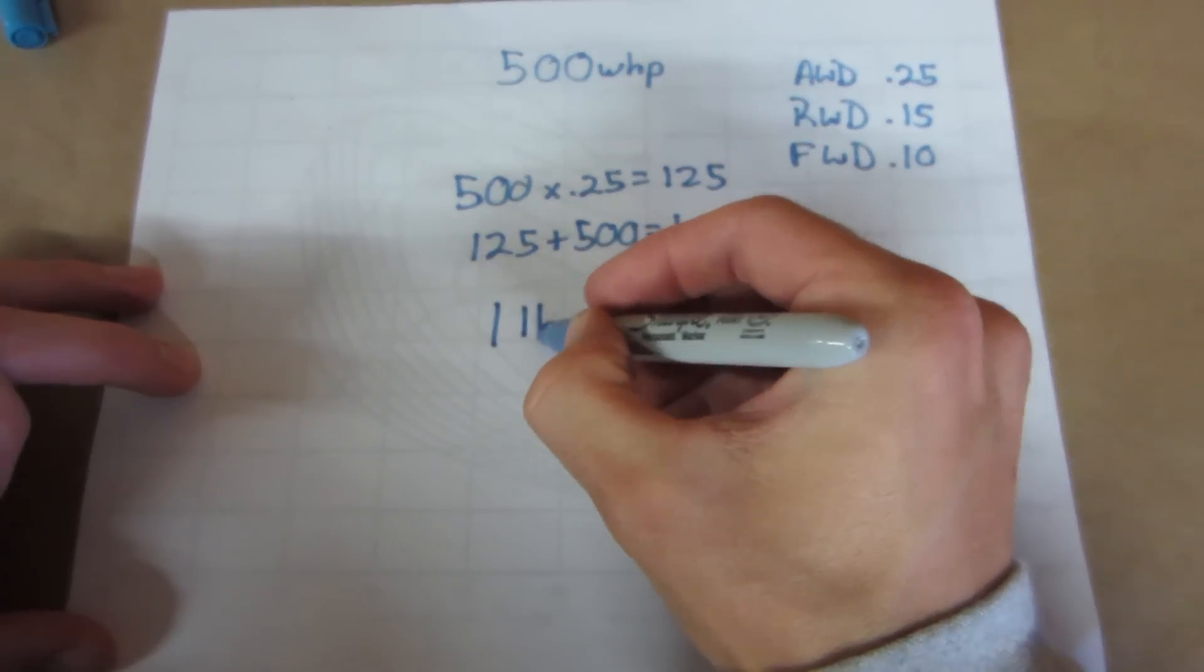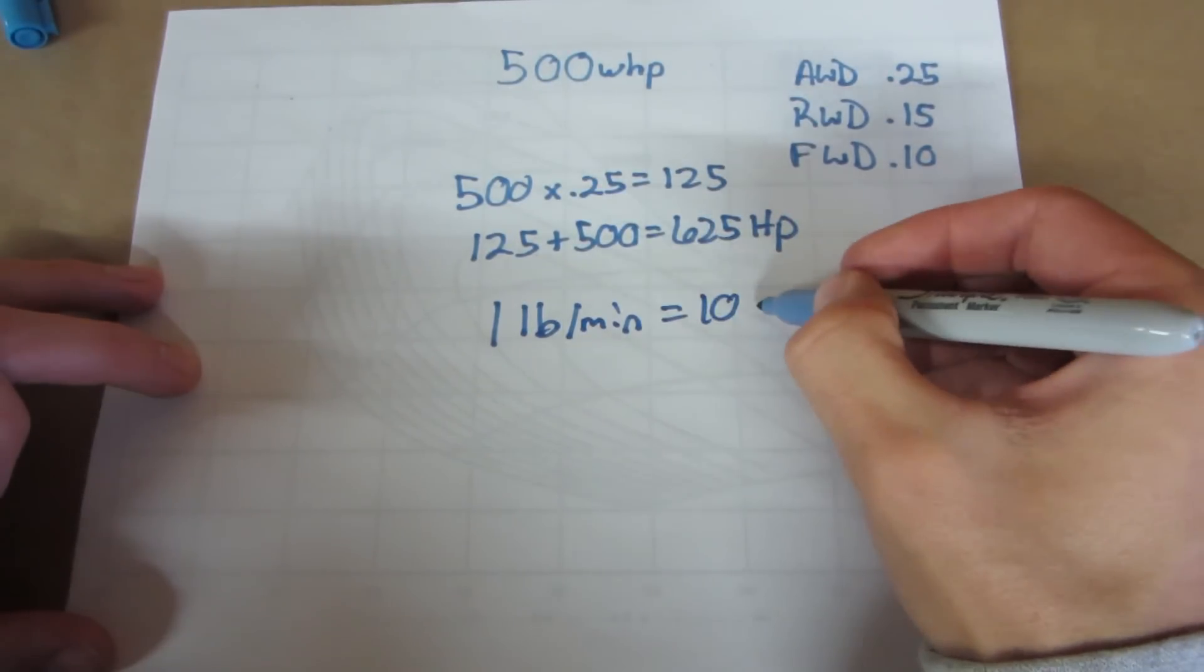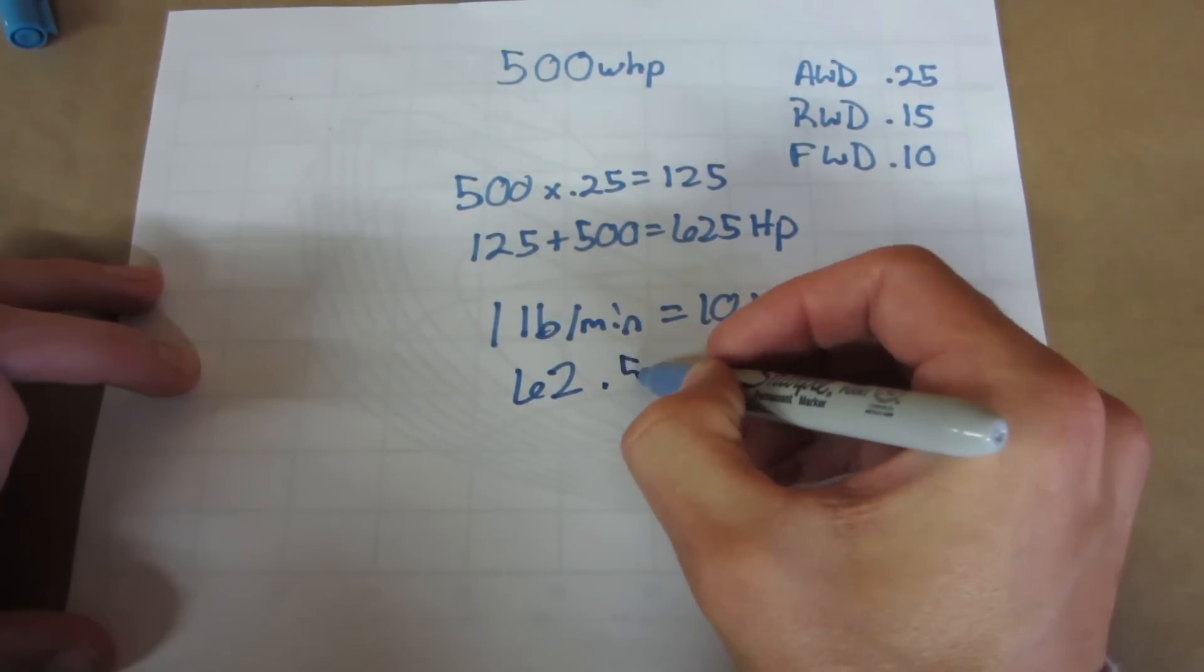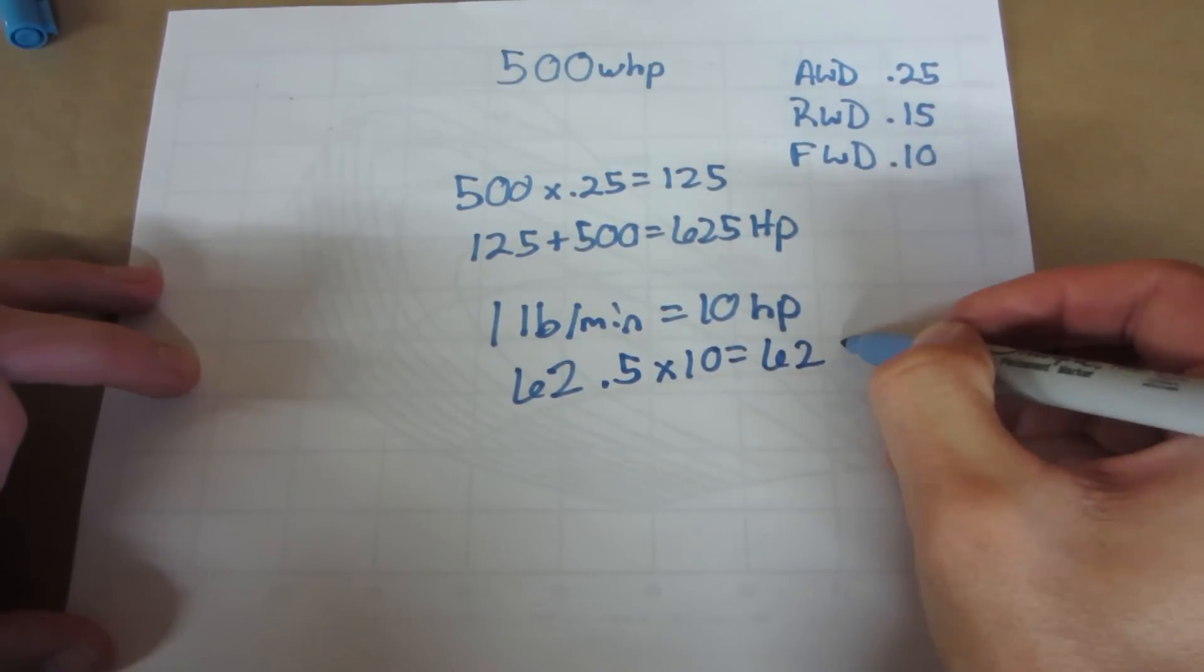It is a good rule of thumb that one pound minute of airflow equals 10 horsepower at the crank. So you would need 62 and a half pound minute of airflow to get your 625 horsepower. Of course there are many other variables, but this allows you to make a good educated guess.